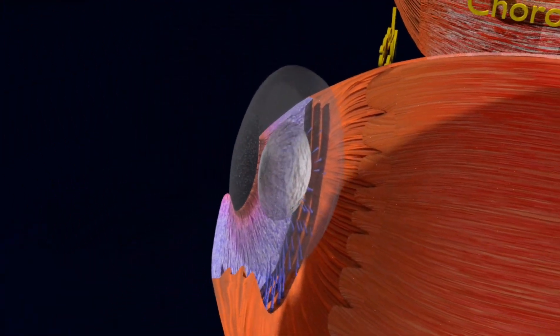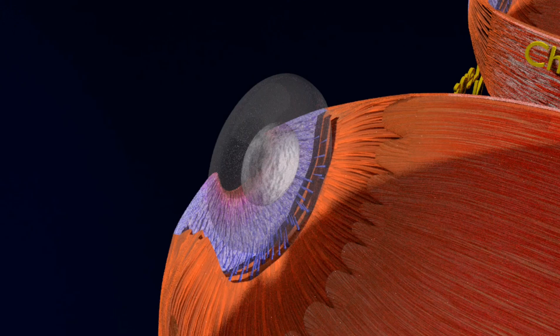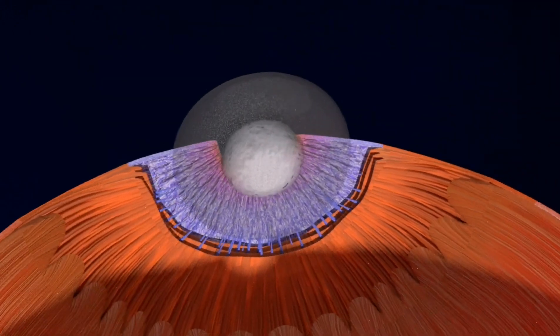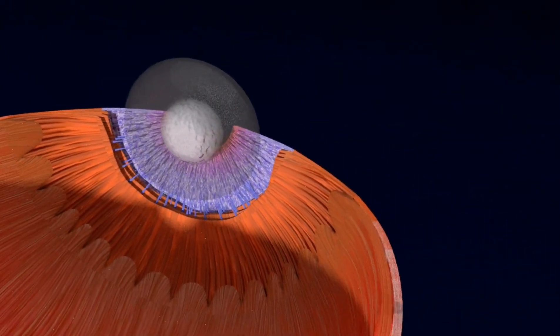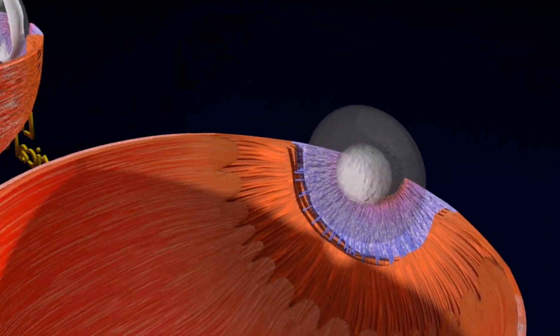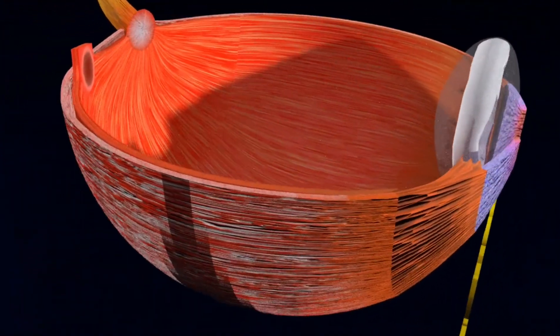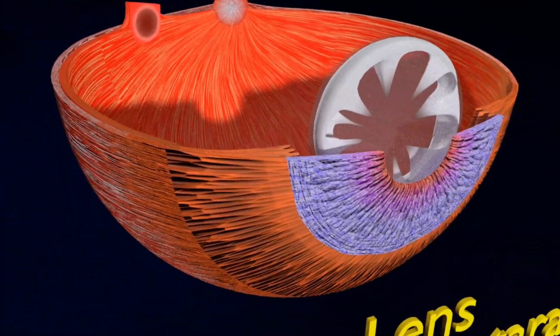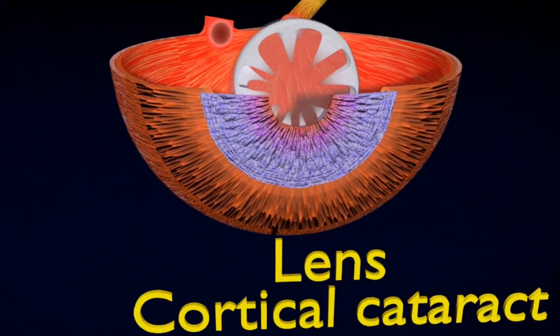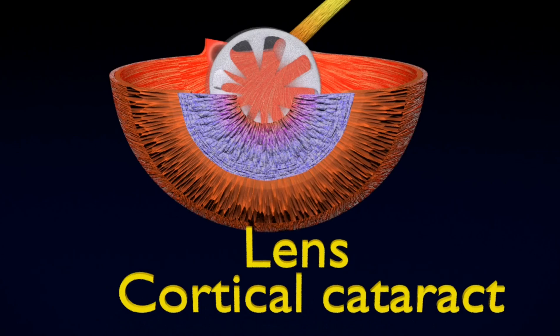In early stages, an increase in sclerosis may cause an increase in refractive index of the lens. This causes a myopic shift that decreases hyperopia and enables presbyopic patients to see at near without reading glasses. This is only temporary and is called second sight.